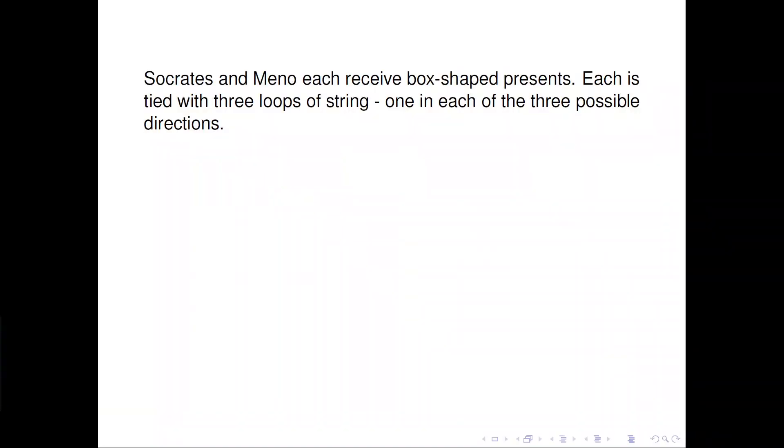Socrates and Meno each receive box-shaped presents. Each is tied with three loops of string, one in each of the three possible directions.